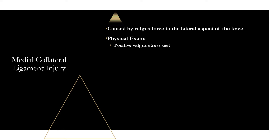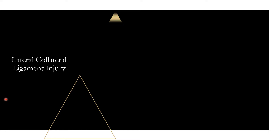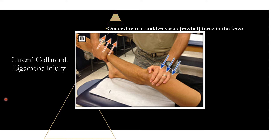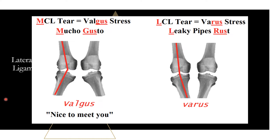LCL injury occurs due to a sudden varus force to the knee and is among the least common knee injuries. It's rarely an isolated injury. The physical exam test is a positive varus stress test, performed at 30 degrees of flexion and full extension while applying varus stress. Remember: varus stress for LCL — leaky pipes rust.